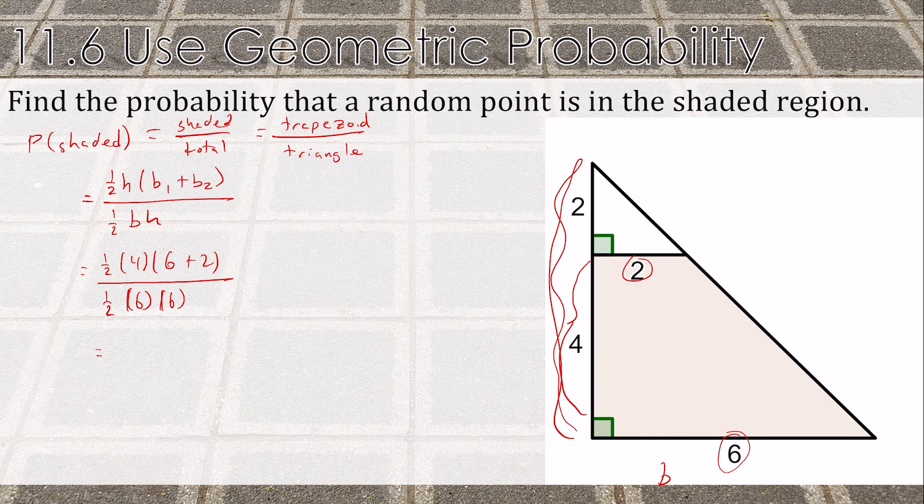On the top, I'll have a half times 4 is 2, times 8. At the bottom, I have half of 6, which is 3, times 6. So I have 16 over 18.